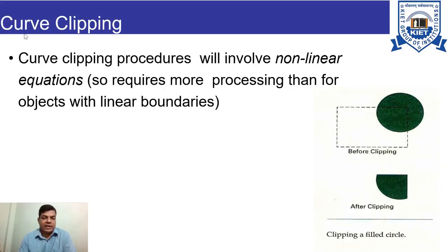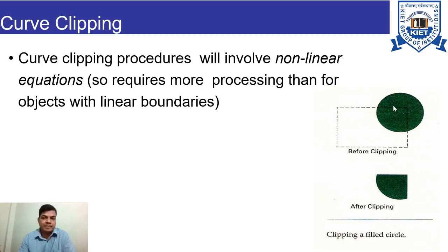The next type is curve clipping. Curve clipping procedures involve nonlinear equations, so they require more processing than objects with linear boundaries. We have an object that is circular, and we apply clipping — whatever portion is inside the window is kept for display and the remaining portion is discarded. Objects which are circular require more calculations.